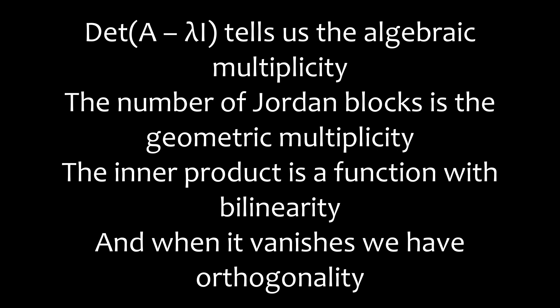Det(A minus lambda I) tells us the algebraic multiplicity. The number of Jordan blocks is the geometric multiplicity. The inner product is a function with bilinearity, and when it vanishes we have orthogonality.